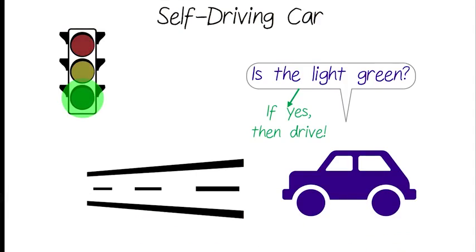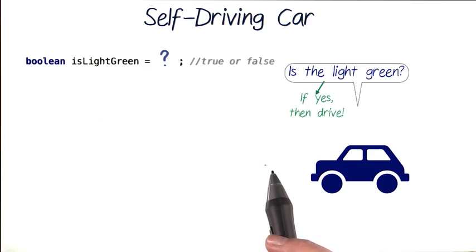We first need to know whether the light is green or not. And if it is, then we want to drive. So let's translate this into Java code.